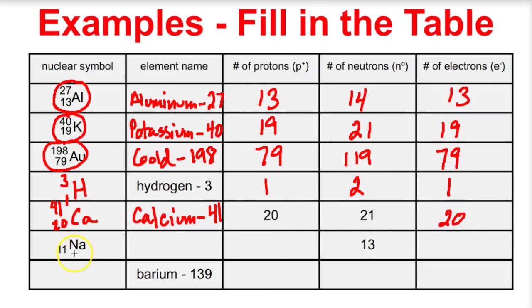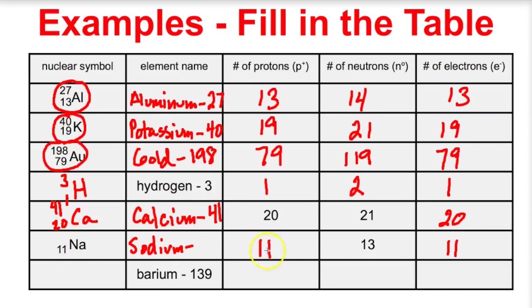What about this one? We have a nuclear symbol for sodium (Na). We know its atomic number, which is the number of protons and also the number of electrons. We have to figure out the mass number: the mass number is always the number of protons plus the number of neutrons. So 11 plus 13 is 24. The nuclear symbol should look like sodium with mass number 24 and atomic number 11.